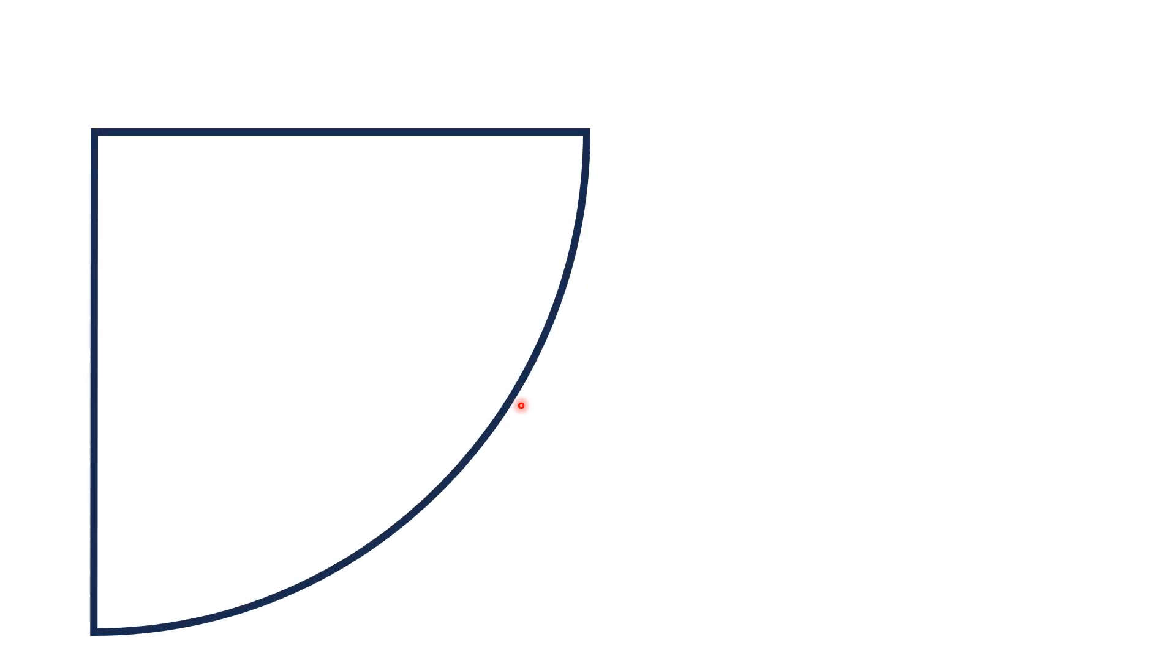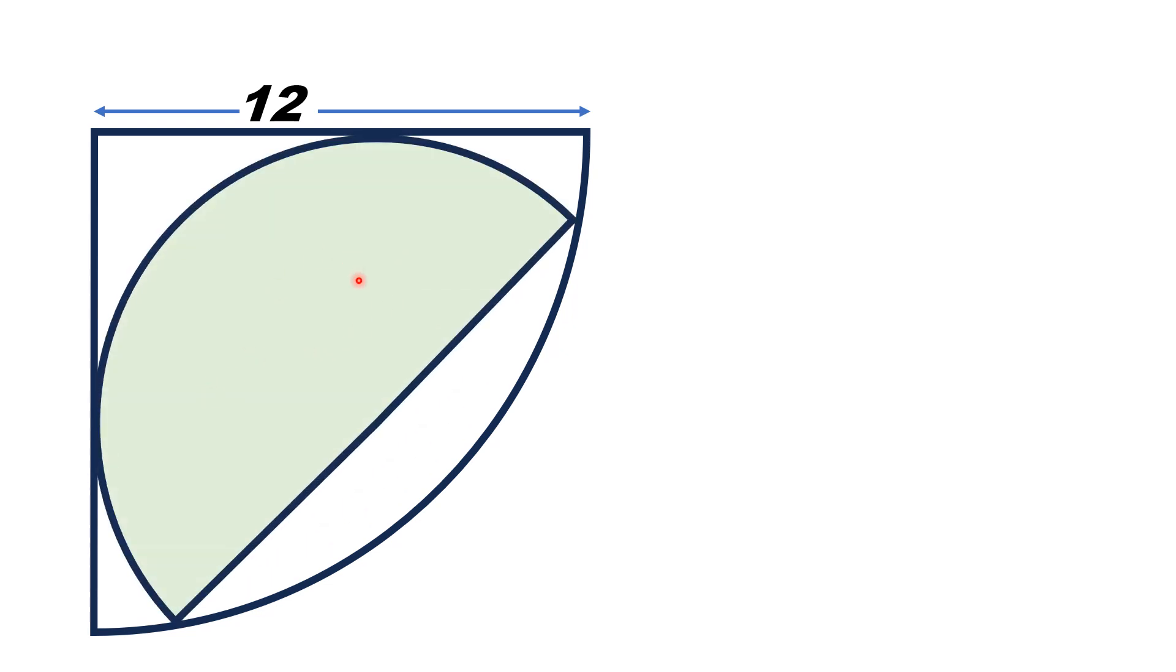Hello everyone, in this video given is a quarter circle with radial length equal to 12 units and a semicircle is inscribed in this quarter circle in such a way that the circumference of the semicircle is tangent from inside to both radii of the quarter circle.